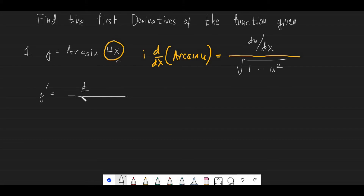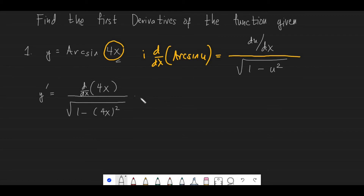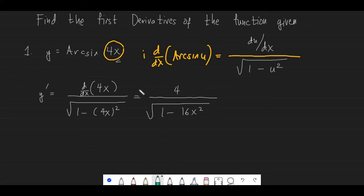For the step-by-step solution, we first write the derivative of 4x in the numerator, and then in the denominator we have 1 minus 4x squared. So the derivative of 4x is 4, divided by the square root of 1 minus 16x squared. That is already your answer for the first derivative.